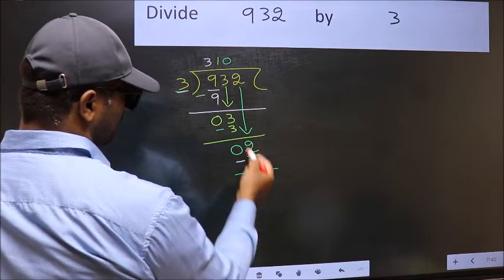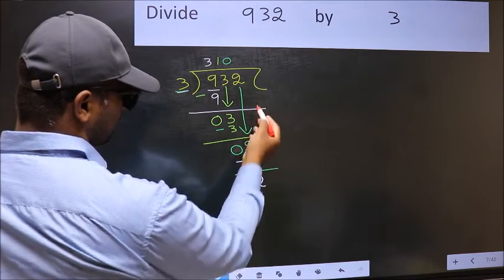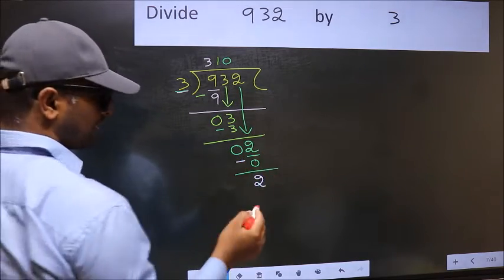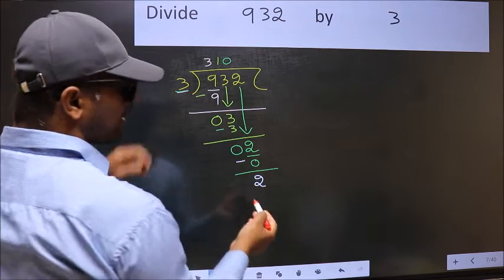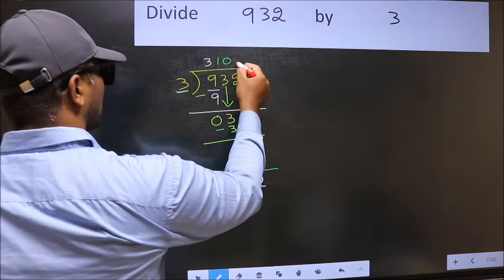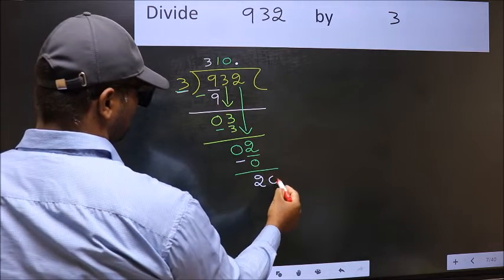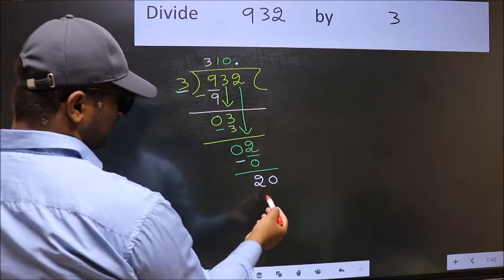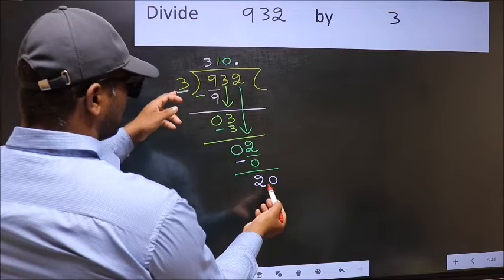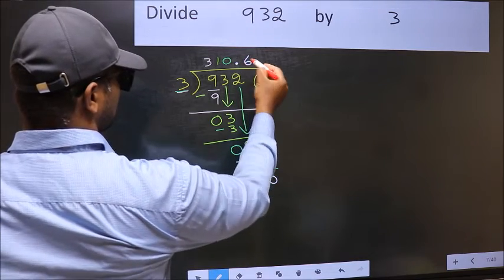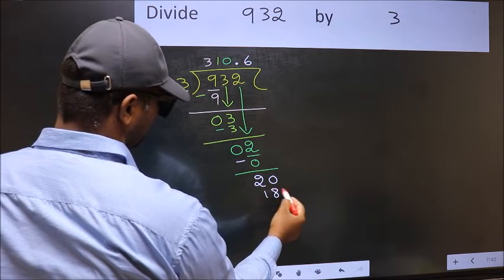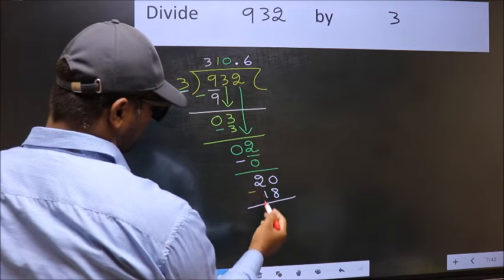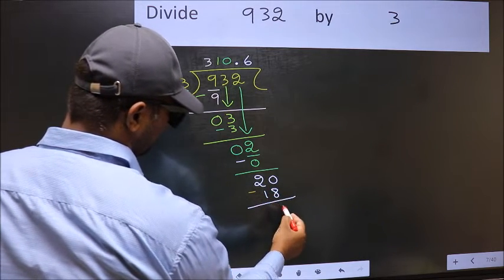Over here, we did not bring any number down, and 2 is smaller than 3. So now you can put a dot and take 0. So, 20. A number close to 20 in 3 table is 3 times 6, 18. Now you should subtract. 20 minus 18, 2.